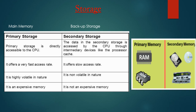There are two main types of memory. The first is main memory, also called primary storage, and the second is backup storage memory, also called secondary storage memory. Primary storage is directly accessible to the CPU and offers a very fast access rate. It is highly volatile in nature.